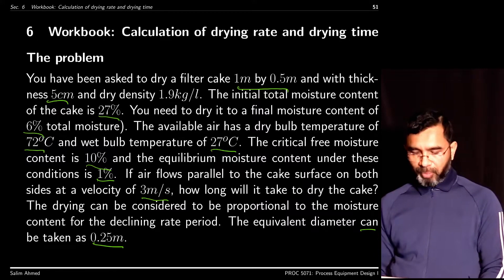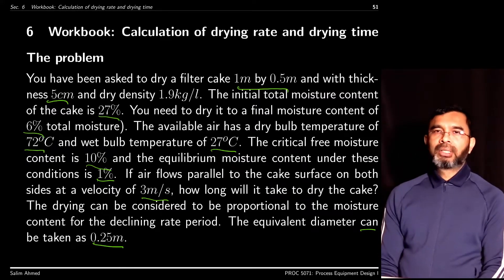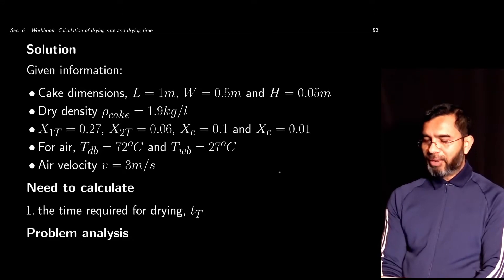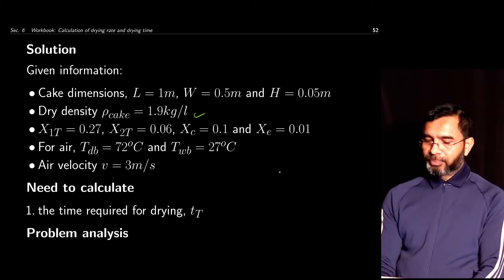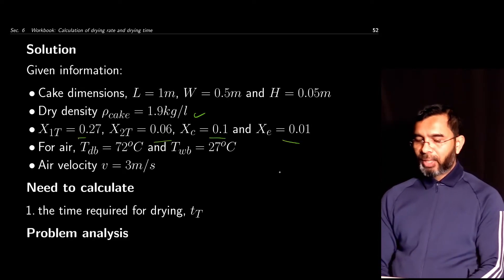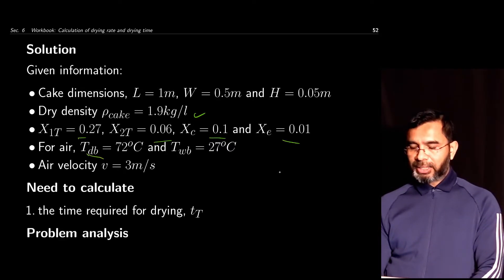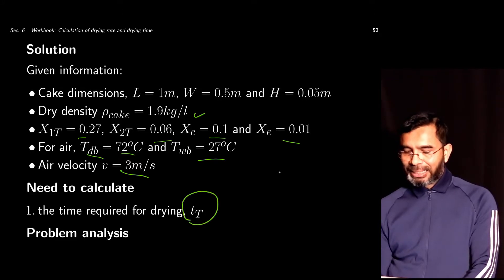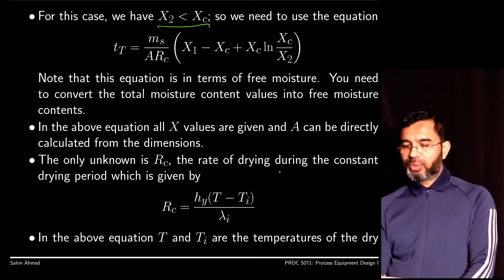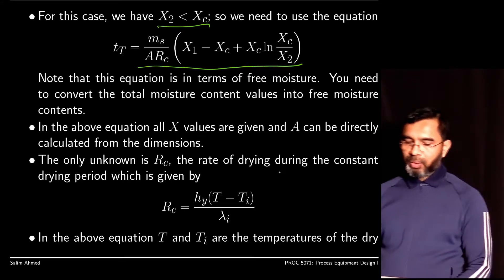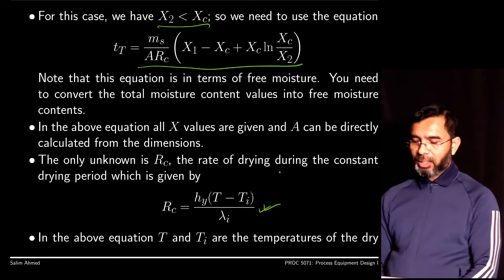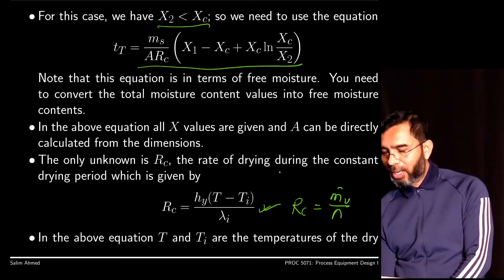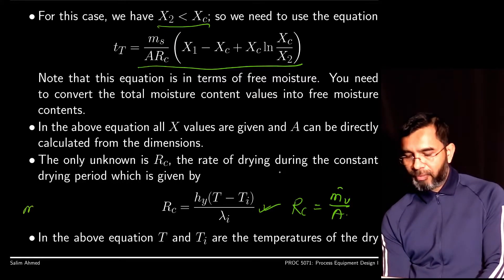The wet bulb temperature of the air is taken as the temperature at the surface of the solid. We are given cake dimensions (length, width, height), dry density, initial and final moisture content, critical and equilibrium moisture content, dry bulb and wet bulb temperature, and air velocity. Since X2 is less than Xc in this case, we use the full drying equation. To find Rc, we use: Rc = hy·(T − Ti) / λi, where λi is the latent heat at the interface. Dividing by area A gives the rate during the constant rate period.